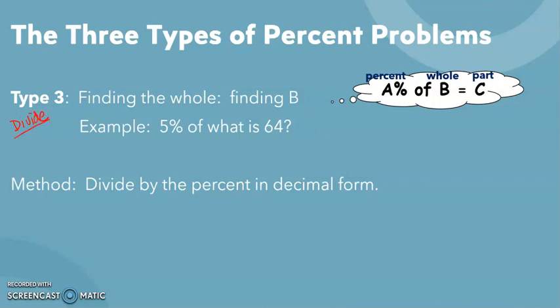In Type 1, you're going to multiply by the percent. In Type 3, you're going to divide by the percent. In this case, 5% of what is 64? You're going to take that 64, divide it by 0.05. And remember, when you divide by a small number, you're going to get a big number.